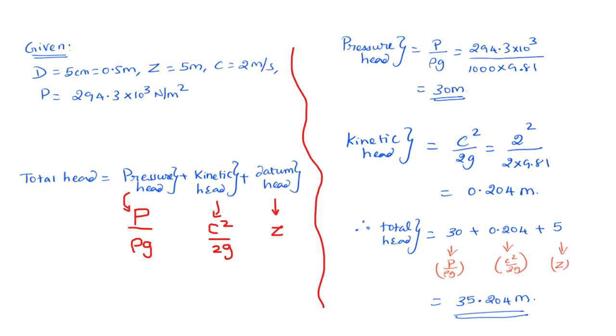What about the total head then? Total head would be the pressure head which is 30, the kinetic head which is 0.204 and the datum head which is 5. So the total head is over here. Yeah. It is as simple as this my dear people.